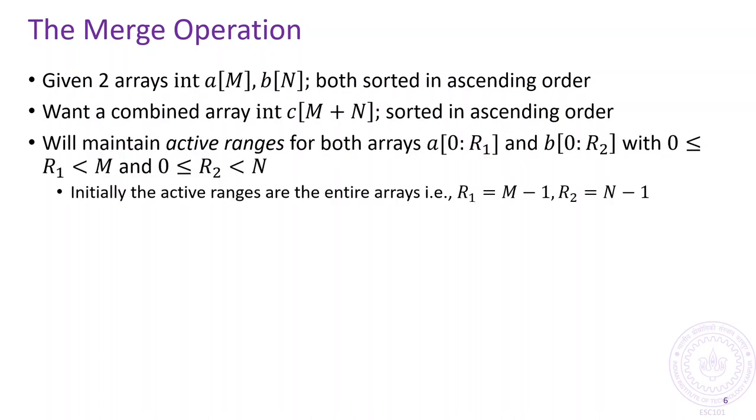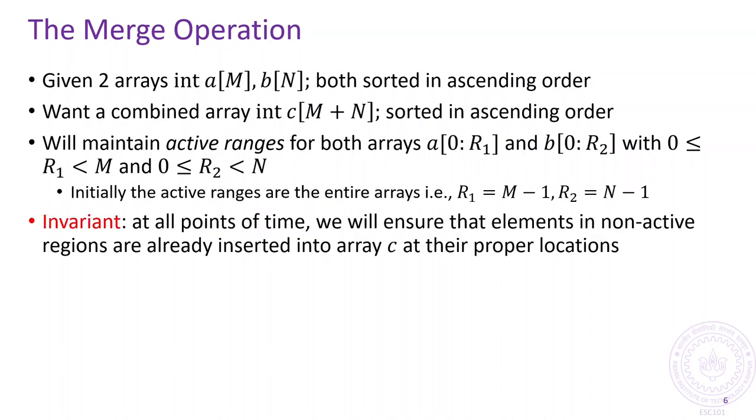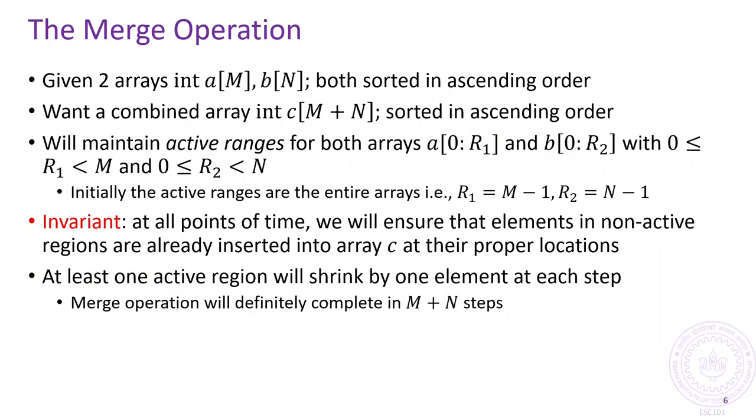We will use the usual way of maintaining active ranges for the two arrays a and b. The invariant we will maintain is that we will ensure that any element of a and b outside of their respective active regions would have already been inserted in their proper locations in the array c. Moreover, at least one of the two active regions will shrink by one element at each step. Since the active regions were the entire arrays a and b at the beginning, this would mean that the merge operation would conclude in no more than m plus n steps at which point both active regions would become empty.